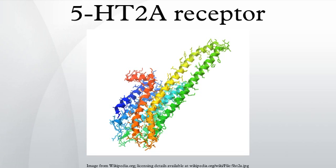Peripherally selective agonists: One effect of 5-HT2A receptor activation is a reduction in intraocular pressure, and so 5-HT2A agonists can be useful for the treatment of glaucoma. This has led to the development of compounds such as AL-34662 that are hoped to reduce pressure inside the eyes without crossing the blood-brain barrier and producing hallucinogenic side effects. Animal studies with this compound showed it to be free of hallucinogenic effects at doses up to 30 mg/kg, although several more lipophilic analogues did produce the head-twitch response characteristic of hallucinogenic effects in rodents.